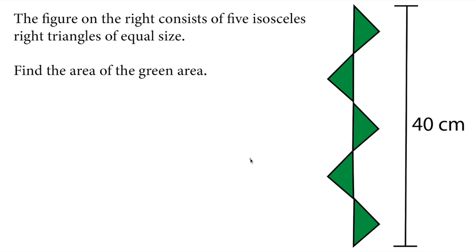We are given 5 isosceles triangles. The hypotenuse of each triangle forms a line segment which is 40 cm. And each one of them is 8 cm, which we get by dividing 40 by 5.